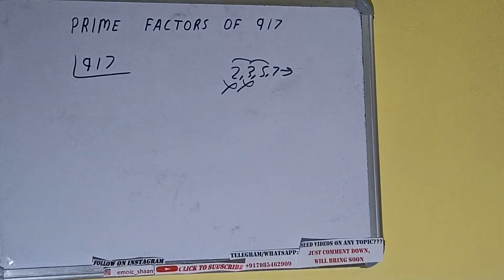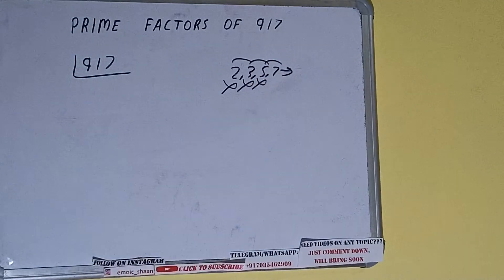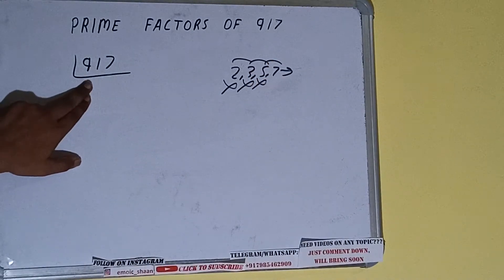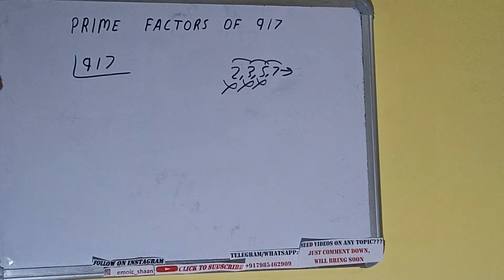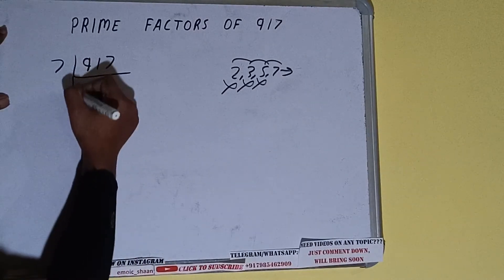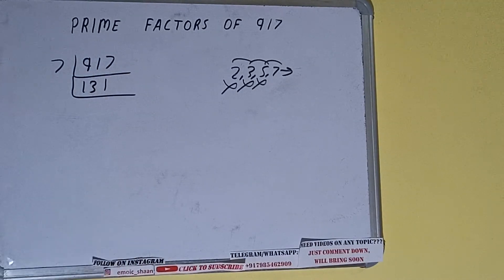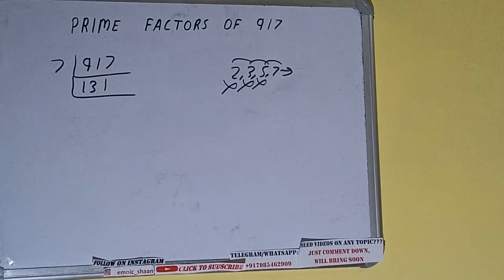Let's check with 7. 7 thirteens are 91, 7 ones are 7 — it is divisible by 7. So divide it: 7 thirteens are 91, 7 ones are 7, giving us 131. 131 is not divisible by 7, and 131 is also a prime number, so it is only divisible by itself, that is 131.